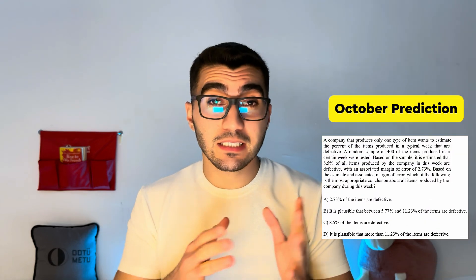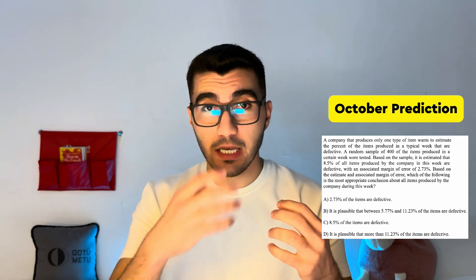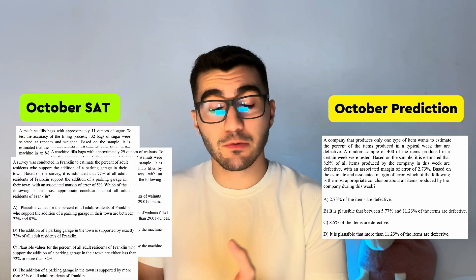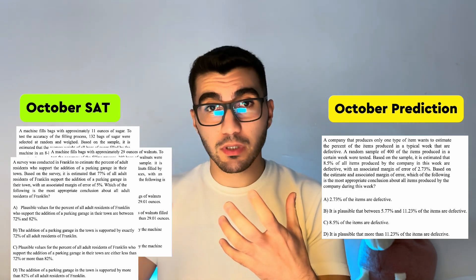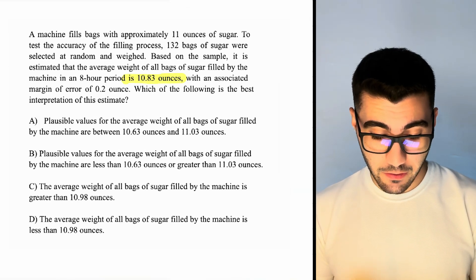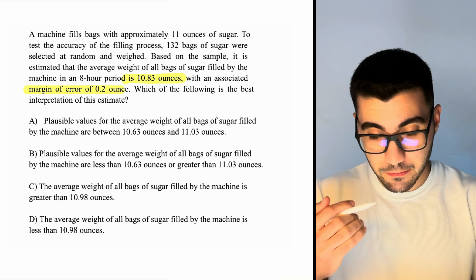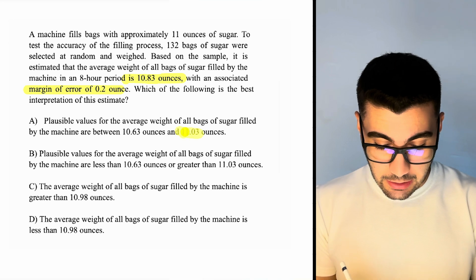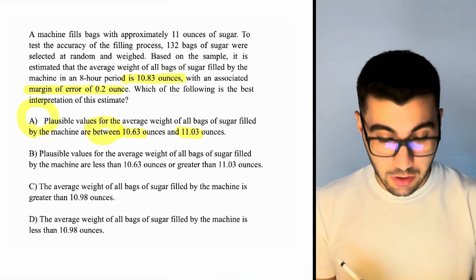The next predicted question was a data analysis question with a random sample, an estimation, and a margin of error. The answer is always estimation plus or minus the margin of error. Here the estimation is 10.83 ounces and the margin of error is 0.2. So 10.83 + 0.2 = 11.03 and 10.83 − 0.2 = 10.63, giving the range. The answer is choice A.